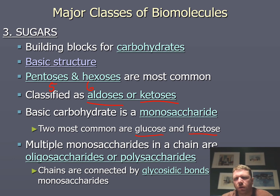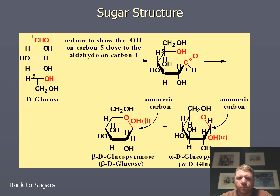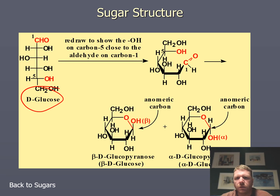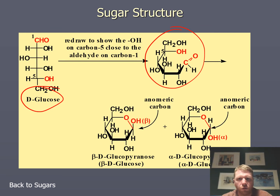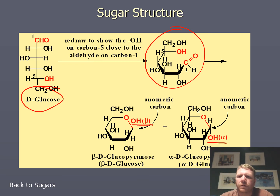Here is an example of D-glucose in its linear straight-chain form, D-glucose as a cyclic sugar, and the two different variations it can take on — it can be an alpha or a beta sugar. We'll get into this later when we talk about carbohydrates.